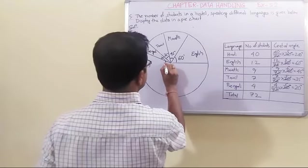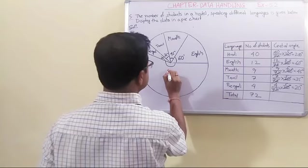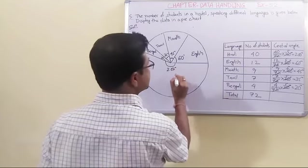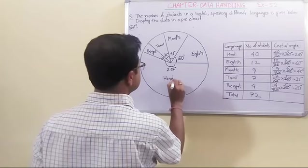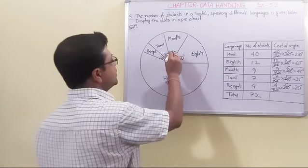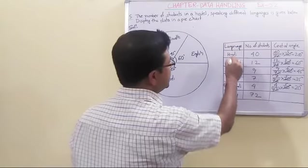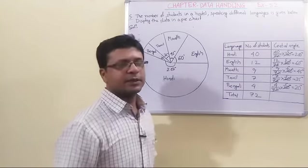Now the whole angle will be the remainder angle, that is 200 degrees. The language is Hindi. In this way you can make all the angles for the corresponding languages. All right, thank you.